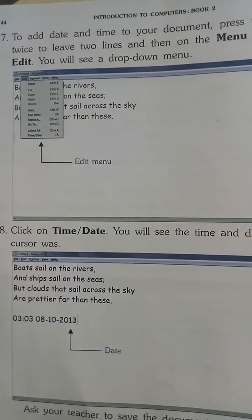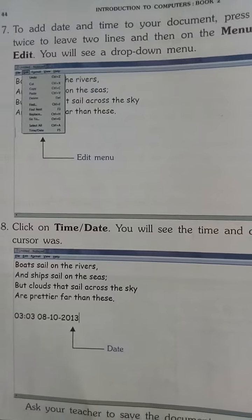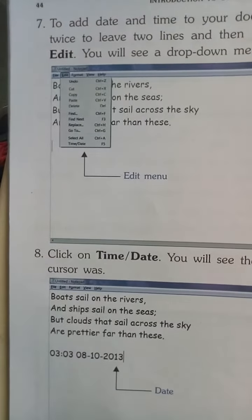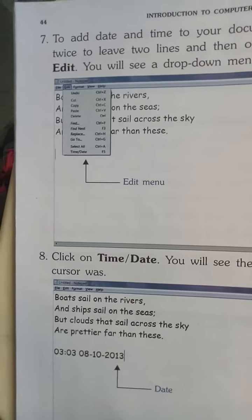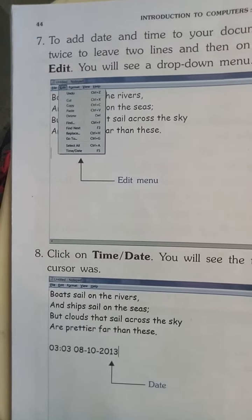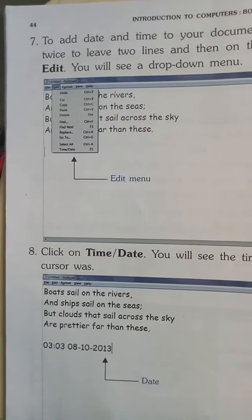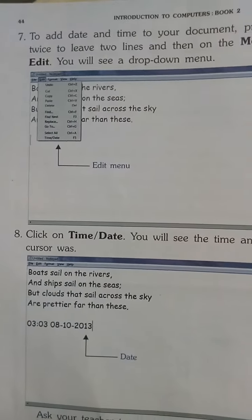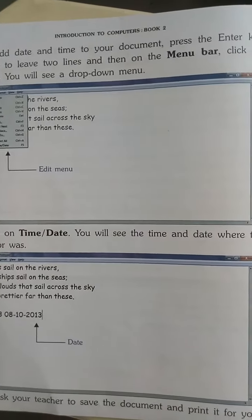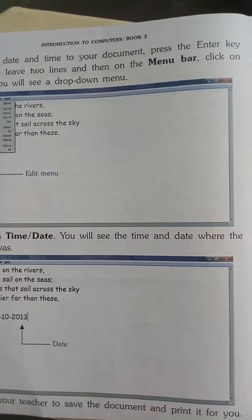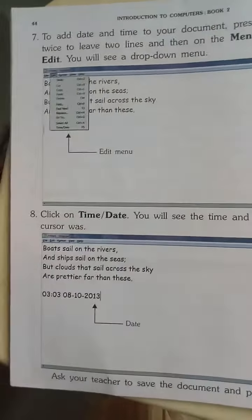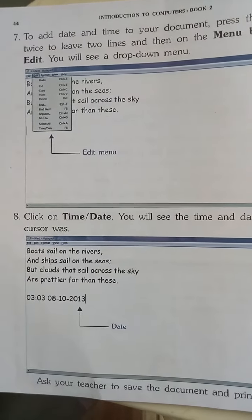Jaise aap click karoge, to drop-down menu open hoga — dhyan se dekho, usme last option hai Time/Date. Click on Time/Date and you will see the time and date inserted where the cursor was.